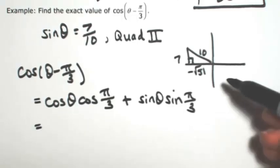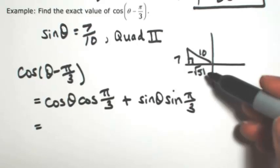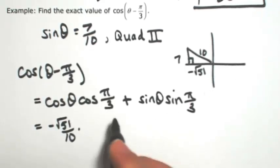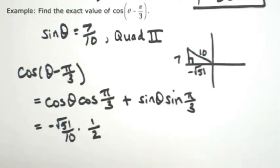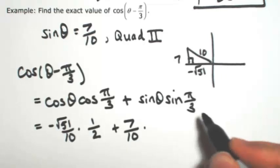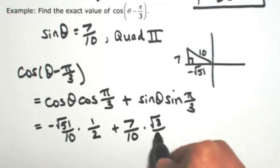So cosine of theta, I can look at the picture. It would be negative square root of 51 over the 10. Cosine of pi over 3 is 1 half. Sine of theta was given. Sine of pi over 3 is square root of 3 over 2.